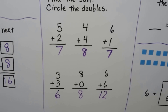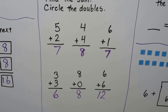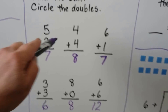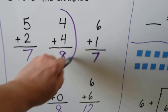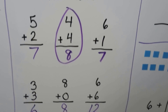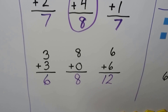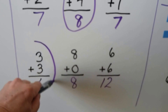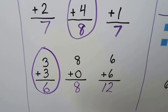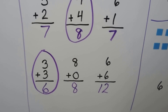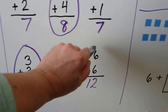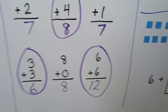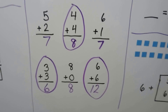Do you see the ones that are doubles? That means the addends are the same. So 4 plus 4 — that's a double. 3 plus 3 — that's a double. And one more: 6 plus 6 — that's a double. Those are the doubles facts.